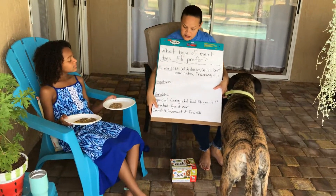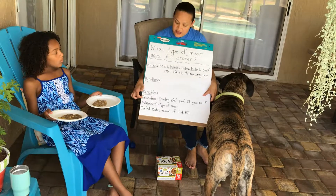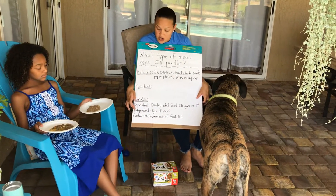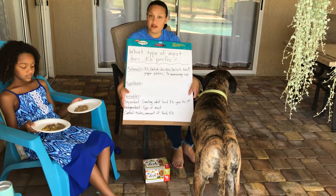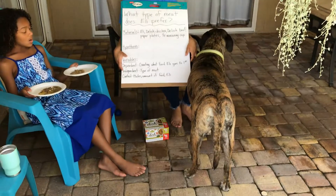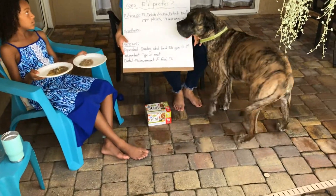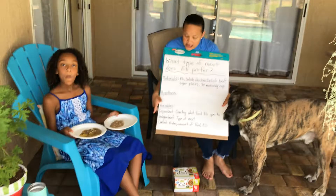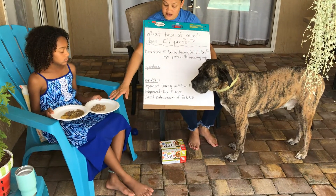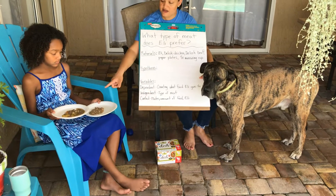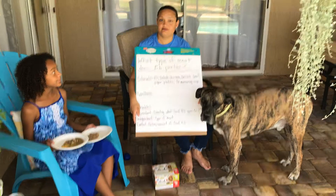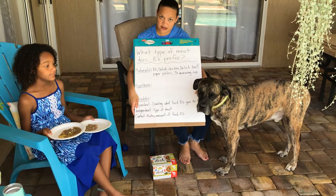Our variables: we have a dependent variable — that's what we're measuring, so we're going to be counting which food Eli goes to first. Our independent variable is the one thing that we're changing — the beef and the chicken. And then the control, or constant, are all the things we're keeping the same: we're going to use the same paper plates, the same amount of food — one-fourth cup — and the same dog, Eli. Payton and I will be doing this each time.